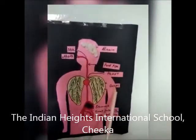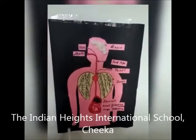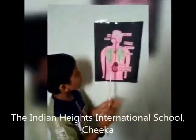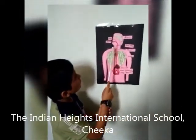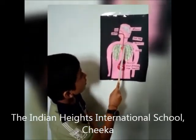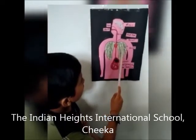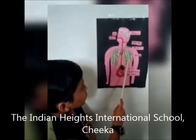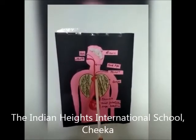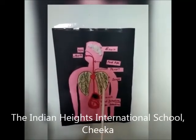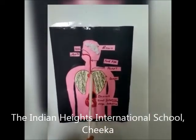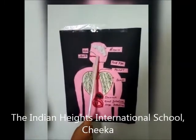Next is lungs. There are two lungs in our body. When we breathe air in through the nose, oxygen goes into the lungs. And when we breathe out, carbon dioxide comes out.